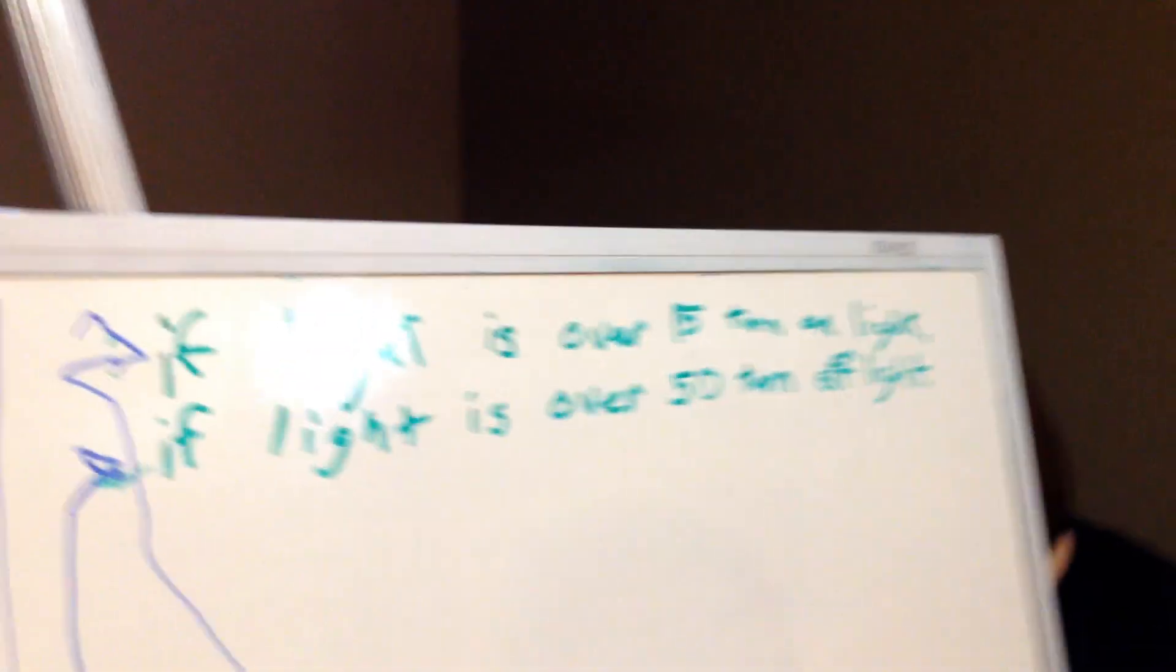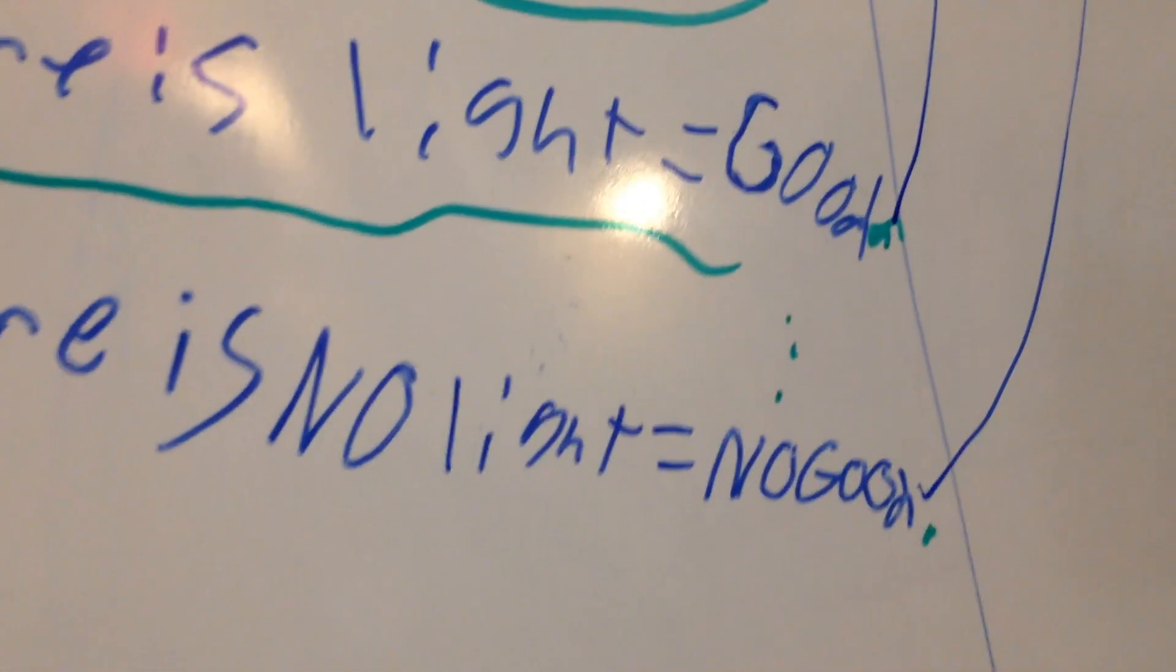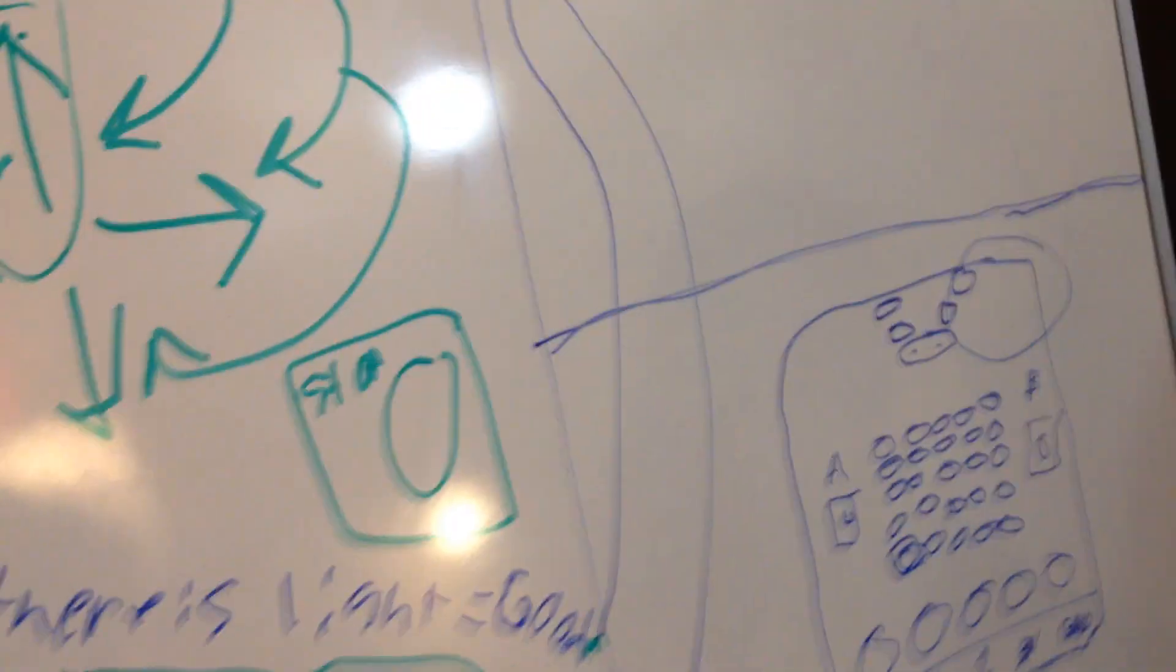Two other things are if light is over 15, turn on light, which fits around with if there is no light equals no good, which turns on the light if light level is over 15. But if it's over 50, then it's good, which means it would turn off light.